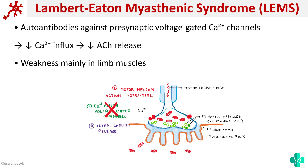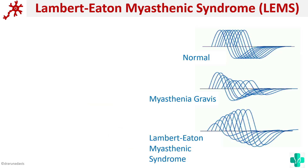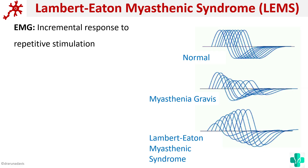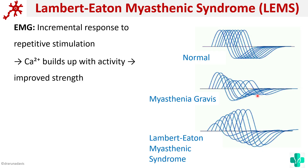How will you differentiate between Lambert-Eaton and myasthenia gravis? In EMG, there would be an incremental response in case of Lambert-Eaton. The reason is that here the problem is insufficient calcium. But if we repeatedly stimulate the nerve fiber, the amount of calcium may build up so that it can cause release of acetylcholine. That is why we say it is an incremental response in Lambert-Eaton, whereas a decremental response in myasthenia gravis. The symptoms for Lambert-Eaton would improve if stimulated, because there will be buildup of calcium with activity, thereby improving the synapse.